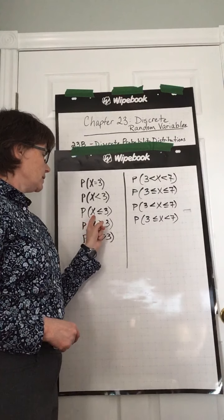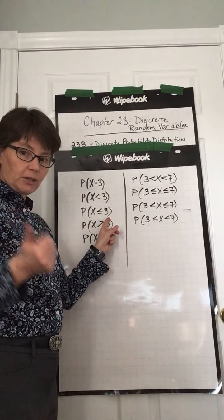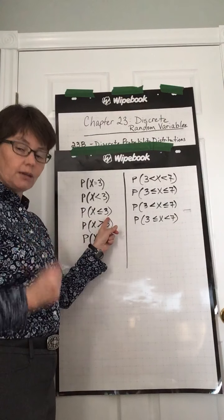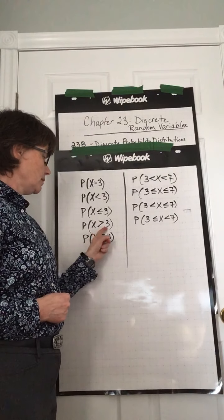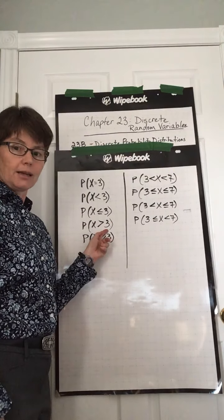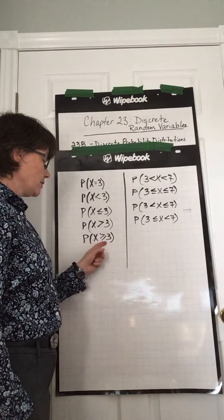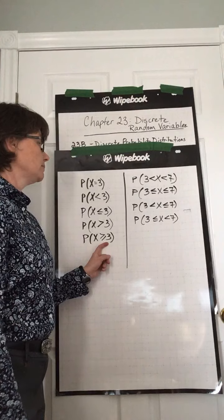Greater than 3, we're not going to use 3. We're going to start at 4 and go as high as it goes. Greater than or equal to 3, this time we'll start at 3 and go as high as it goes. Add all those together.